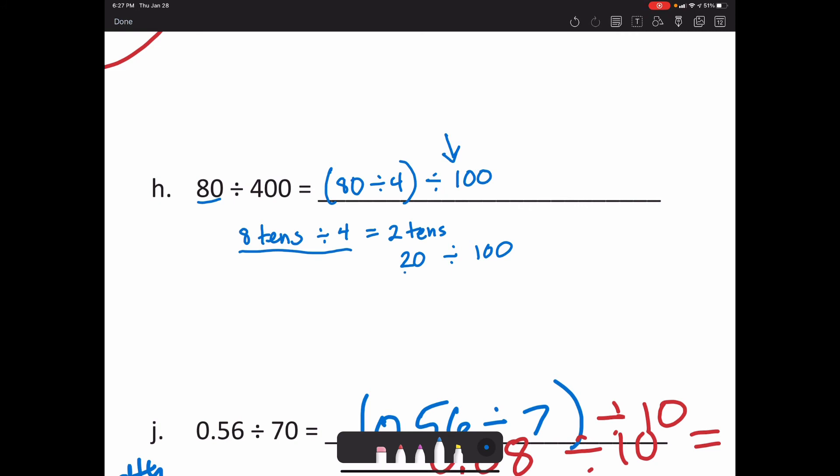here's the tens place, we got the ones place, so that's going to be the decimal, which is the tenths place. So that's going to be two-tenths.